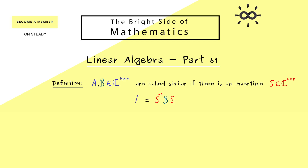The important thing here is that we have the same matrix S on the left-hand side and the right-hand side. However, on one side we need the inverse, so it's important that we have an invertible square matrix S here. It's not so complicated, but still similarity as a notion for matrices is important to remember.